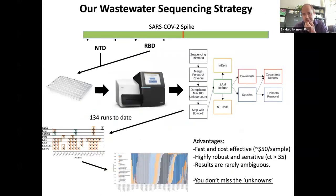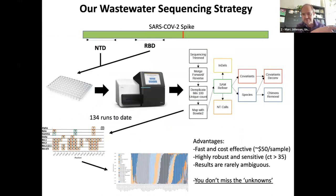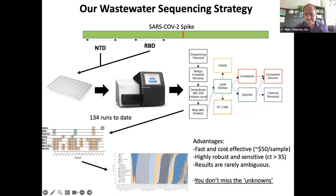The strategy we use in Missouri is to use 500 base pair chunks — we do PCR and then multiplex them and deep sequence them. We don't ask the health department what they want to know about. We just look at what's there and report it: is it EG.5, what is this, what is this — we don't know, and we report it and let them decide which ones to report. This approach doesn't require concentration, the cost of reagents and sequencing is less than $50 a sample, and the results are never ambiguous — it's just this is the sequence. We got it up and running just before the first alpha wave.